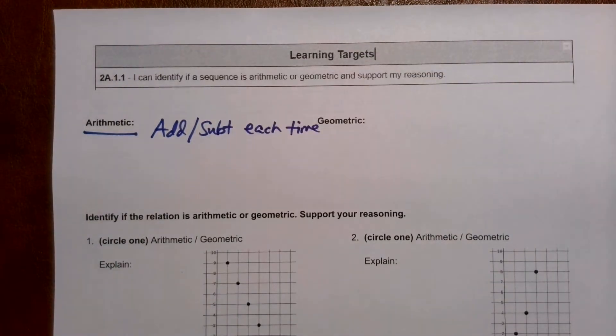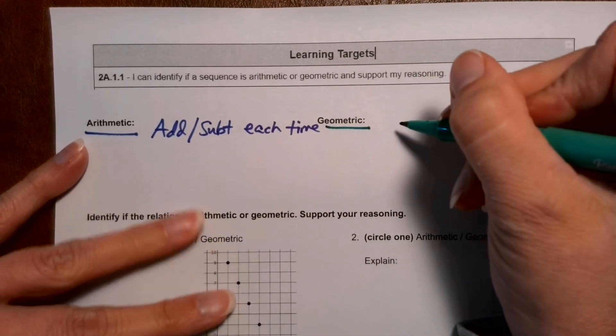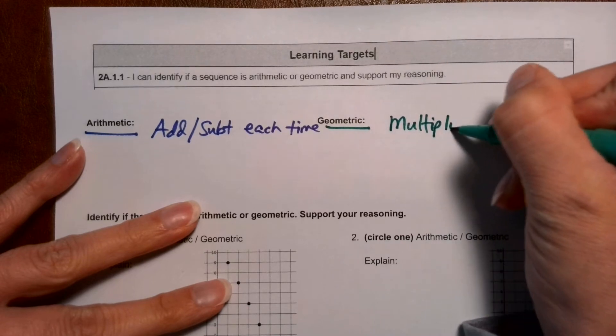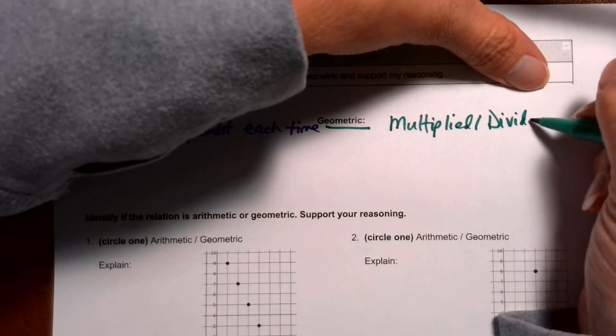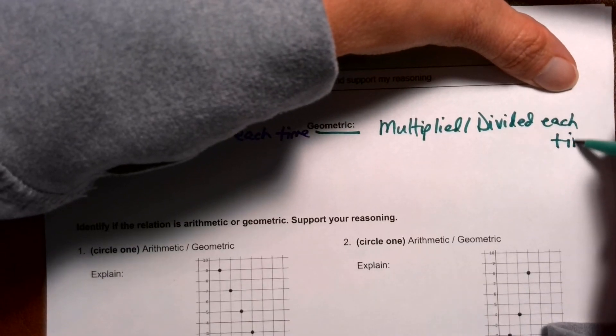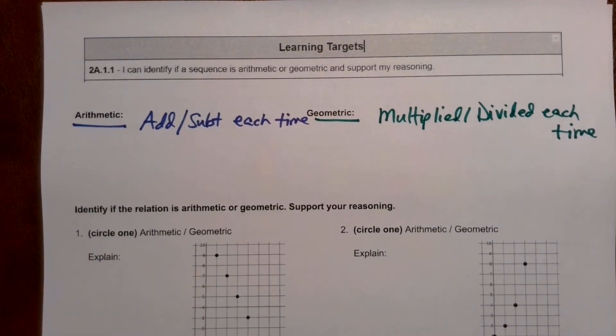Okay, if it's a geometric sequence, then we're going to say something like, the numbers are getting multiplied or divided by the same number each time. Okay, so that would be if you're studying a pattern of numbers.